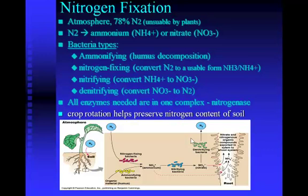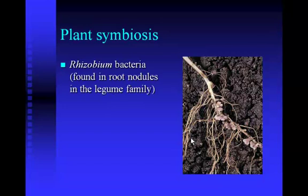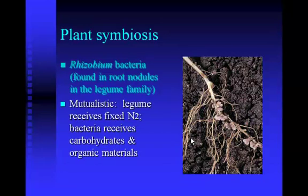Plant symbiosis: if you look at this picture, those little bumps or nodules on the root are called rhizobium bacteria, found in structures called root nodules. It's a mutualistic relationship — the plant provides sugar to the bacteria in those nodules, and the bacteria fix the nitrogen, converting it from an unusable form to a usable nitrate the plant can use. So the bacteria get carbohydrates and the plant gets nitrogen.